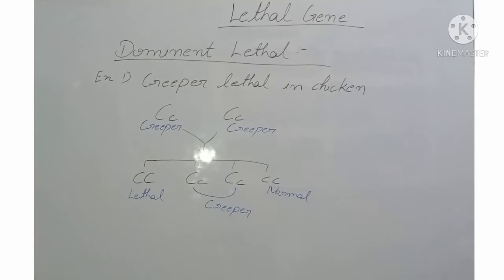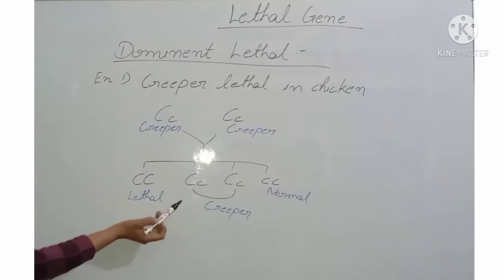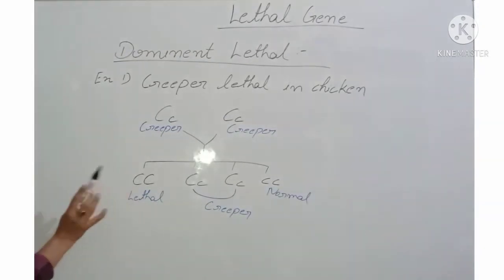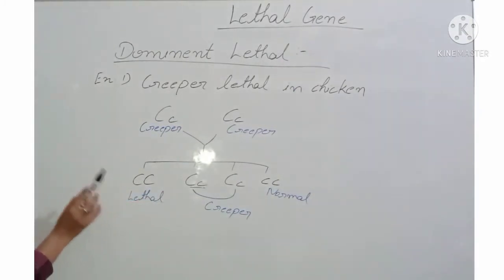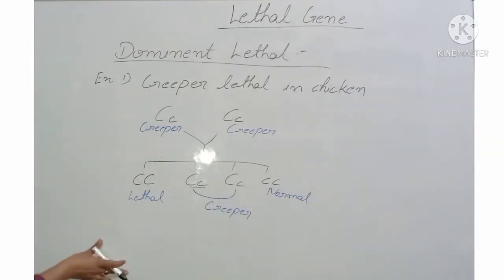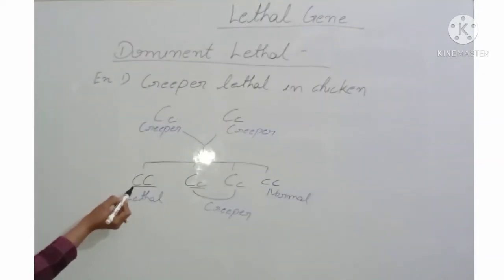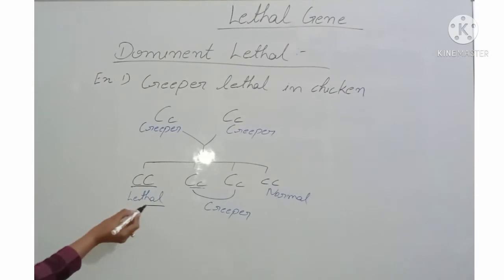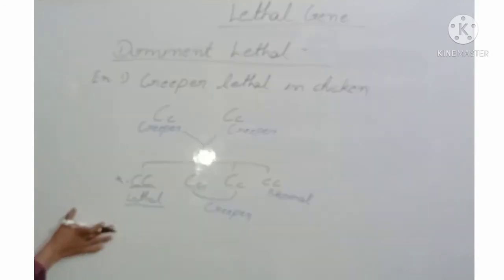Let's look at the example of the creeper chicken cross. These chickens had creeping legs. When we crossed these individuals, we got three surviving types and one condition. The recessive ones were normal chickens, and the heterozygous ones were the creeper-legged chickens. But the homozygous dominant condition was lethal — those individuals were not surviving.